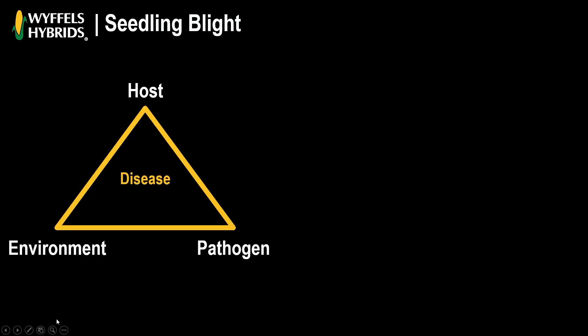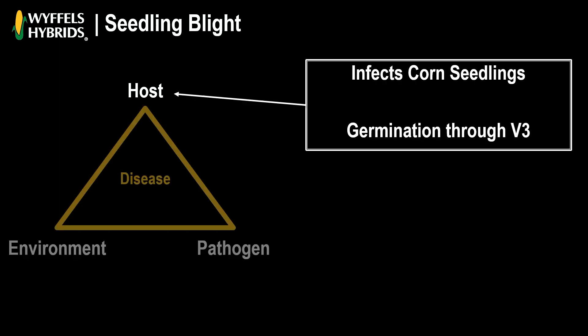Whenever you talk about disease, I like to talk about the disease triangle. First off, you have to have a host. So if we're talking about corn, we're going to plant corn — the seedling is going to be the host.